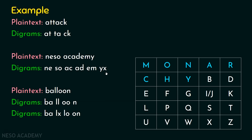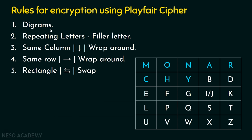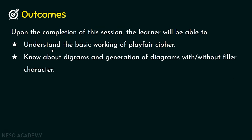That covers rule number one — creating digrams — and rule number two — using a filler character for repeating letters. The filler character, taken here as X, is decided by both the sender and receiver together. I hope you now understand the basic working of Playfair Cipher and how to generate digrams with and without filler character. In the next presentation, we will see how to do encryption using Playfair Cipher. Thank you for watching.